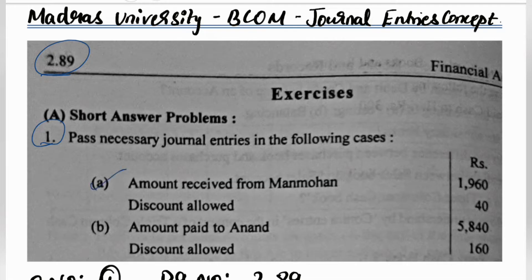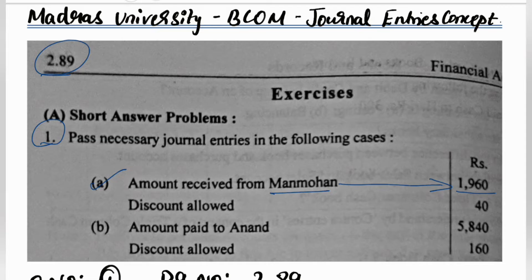First one: amount received from Manmohan, discount allowed. I received $1960. Discount allowed is $40. So $1960 plus $40 is $2000.